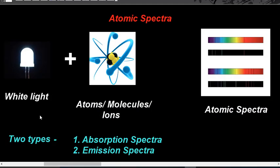As we have already said, an atomic spectra is produced when light interacts with matter. So when white light interacts with matter — that may be an atom, a molecule, or ions — a radiation is emitted, and that radiation is the atomic spectra.